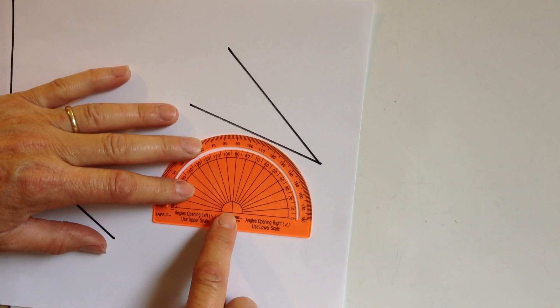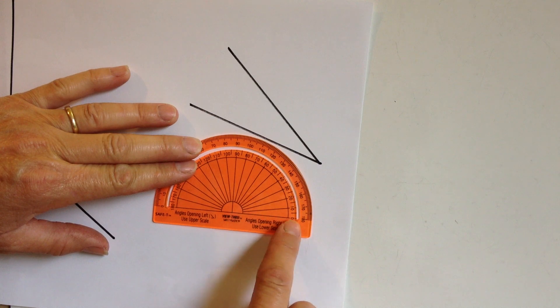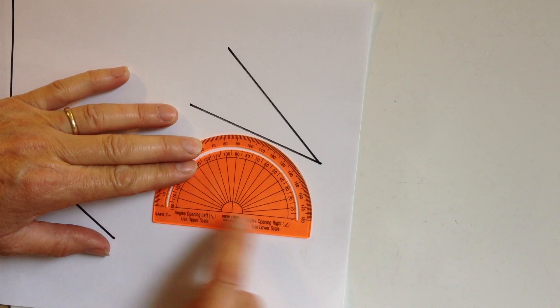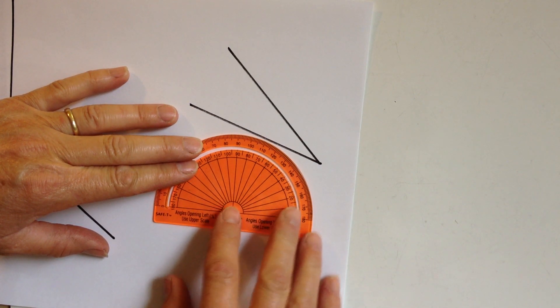That point right there is the center of the circle. It goes on the vertex of the angle. Then either this side or this side needs to line up with the side of the angle.